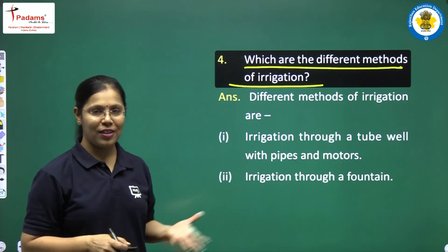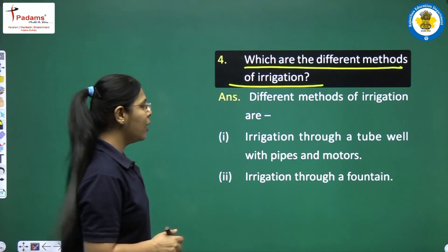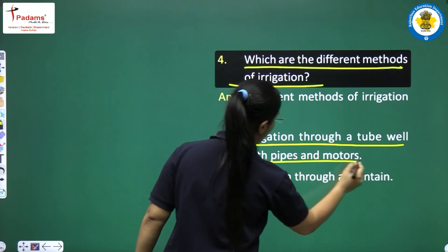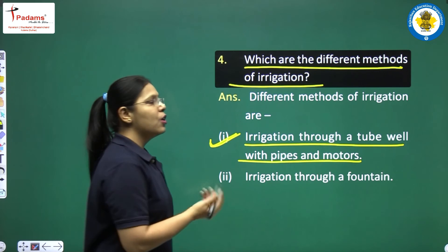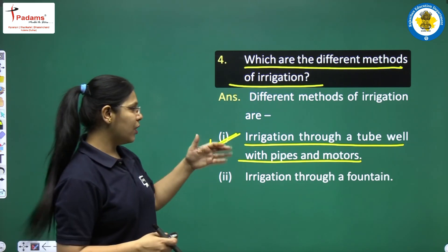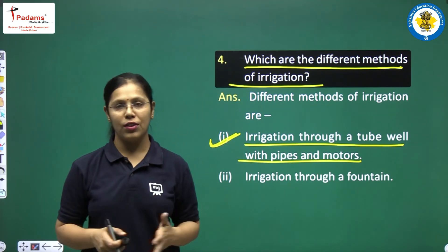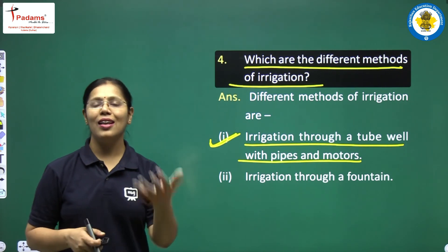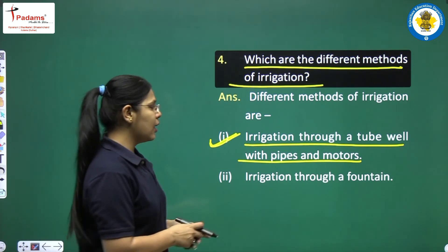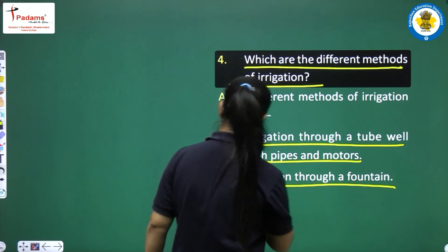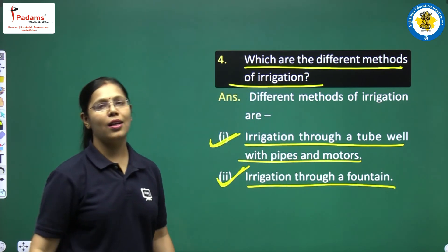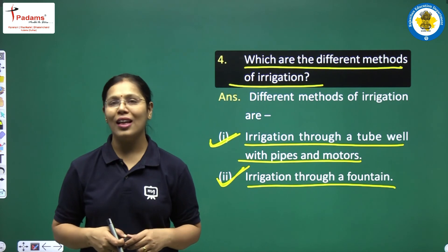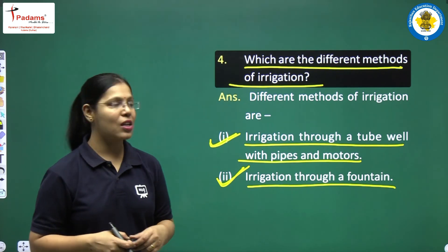Some of the methods of irrigation are: first, irrigation through a tube well with pipes and motors — we can use a tube well with some pipes and a motor to irrigate our fields. The second method is irrigation through a fountain. Fountain irrigation is also common and it is a very efficient method of irrigation.